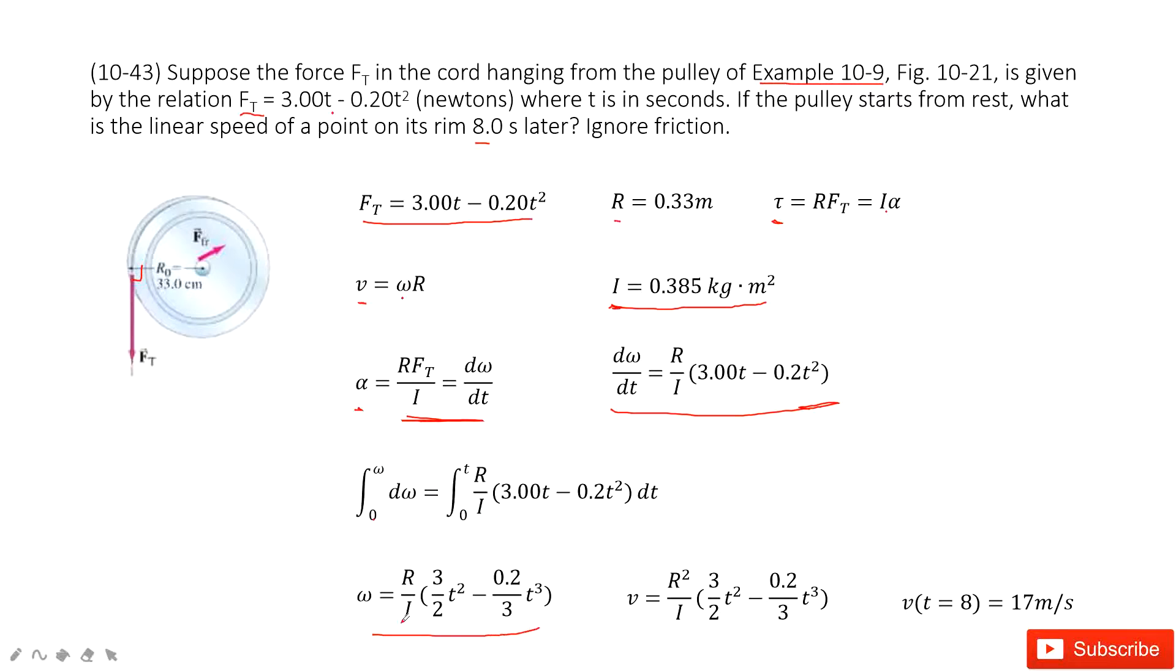For this function, it's omega with t. And we know the linear speed equals omega times r. So we just times r. Now it's done. We get the linear speed as a function with time t. You just input t equal to 8. You get the final answer, 17 meter per second. Thank you.